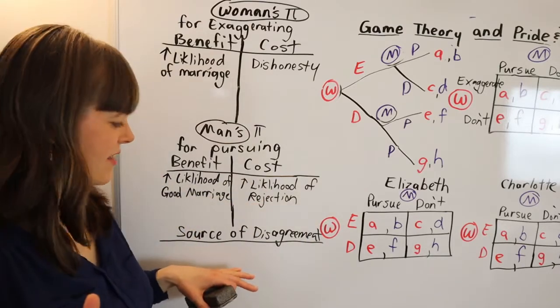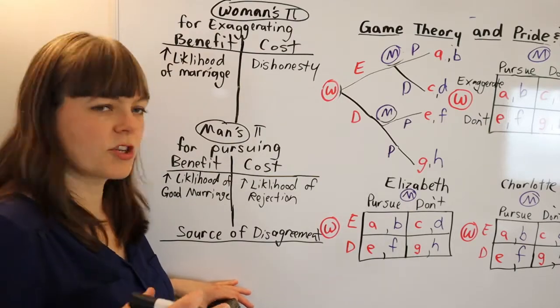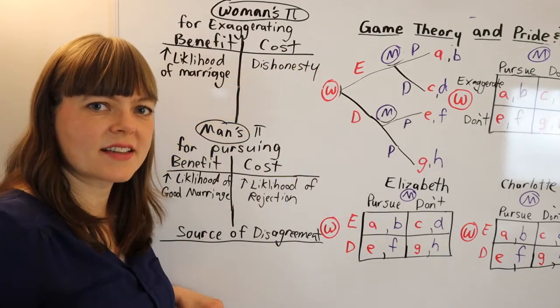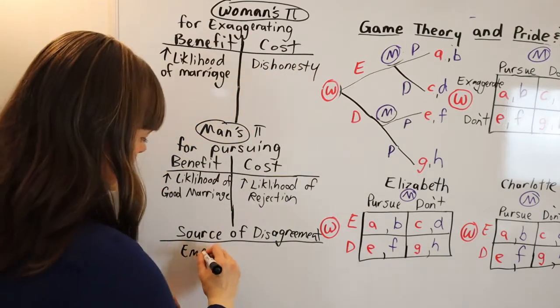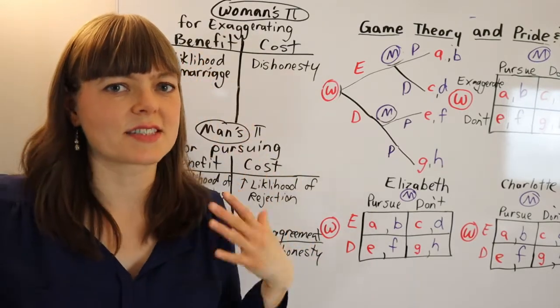And for now, I'm just going to say the source of disagreement between Elizabeth and Charlotte has to do with the emphasis on dishonesty. How bad is it to exaggerate?